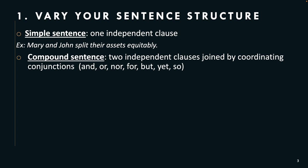A compound sentence is two independent clauses joined by coordinating conjunctions. Coordinating conjunctions are: and, or, nor, for, but, yet, so. Let's take a look at another example: 'Mary kept their house, and John kept their car.' The word 'and' is the coordinating conjunction. If we divide these two independent clauses, we could have two sentences. But we want to join them with a coordinating conjunction such as 'and,' giving us a compound sentence.